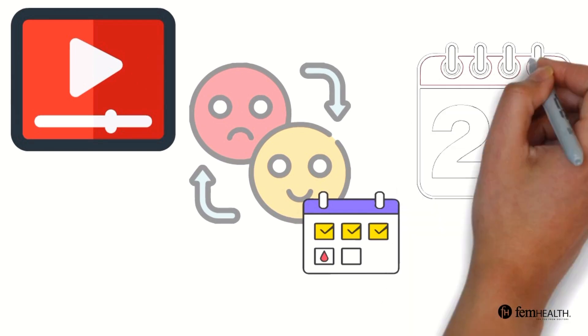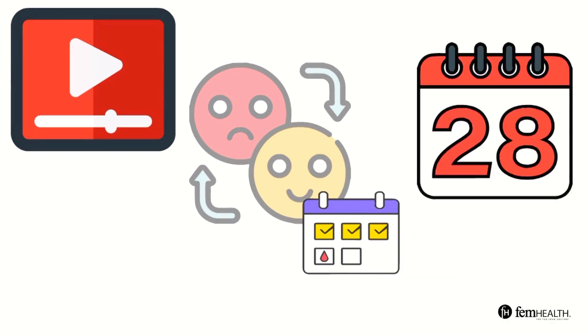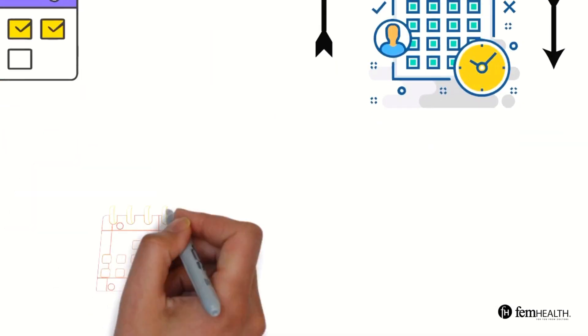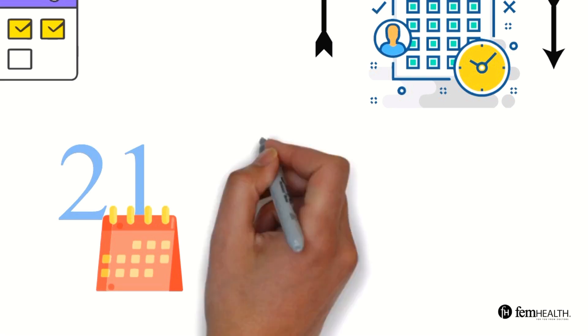First off, the menstrual cycle usually lasts about 28 days but it can be longer or shorter for some people. In some people it can be as short as 21 days and in others it can be as long as 35 days.